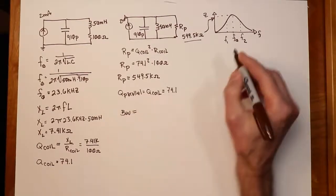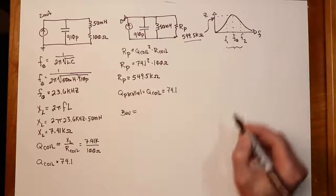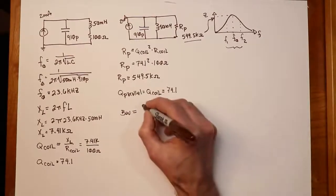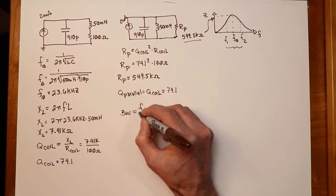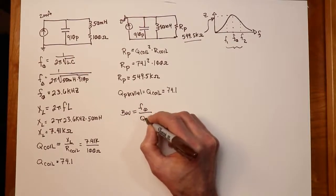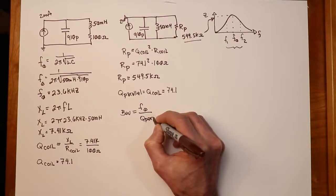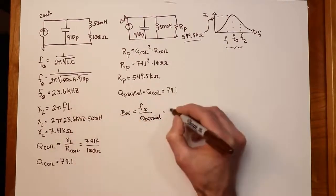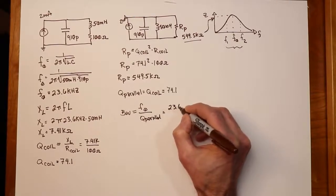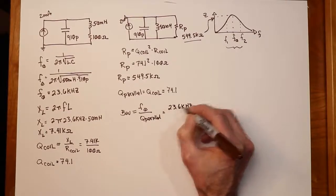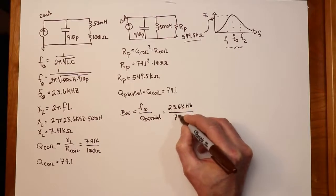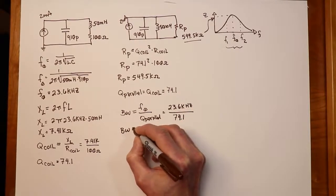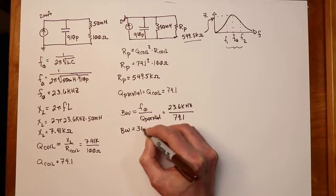In any case, we know what the system Q is, 74.1, so we can now go and figure out the bandwidth. Remember the bandwidth is the distance between F2 and F1. But we can define that in terms of the resonant frequency divided by Q parallel. So that's going to be our F0, which is 23.6k hertz divided by 74.1. So the bandwidth is going to work out to 318 hertz.